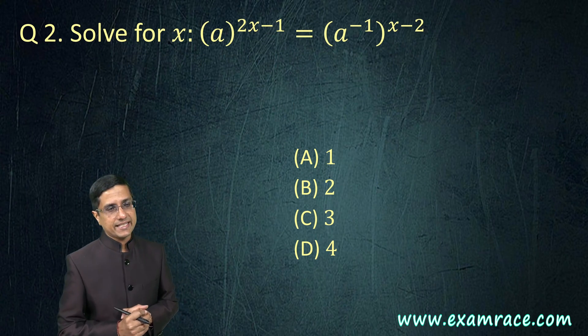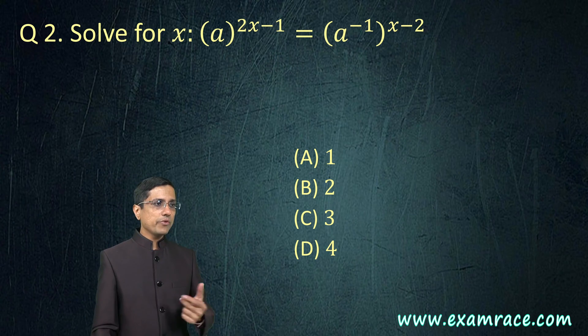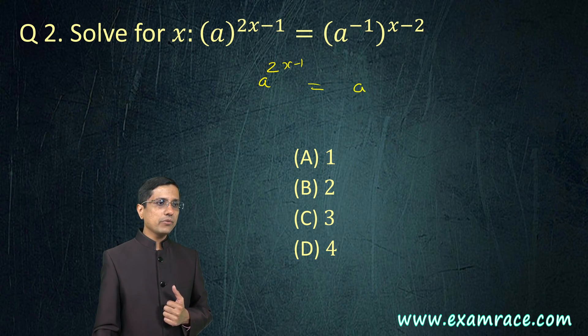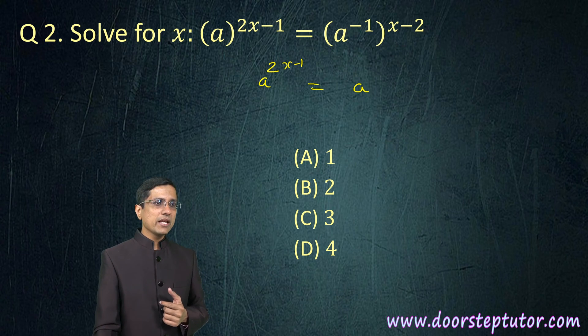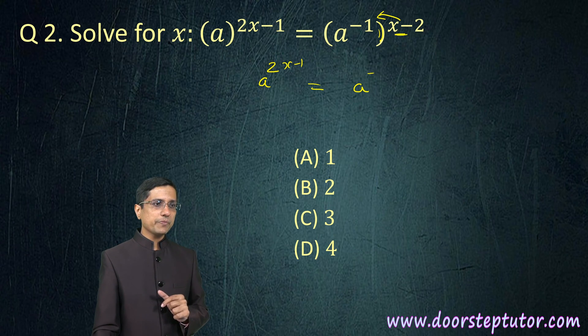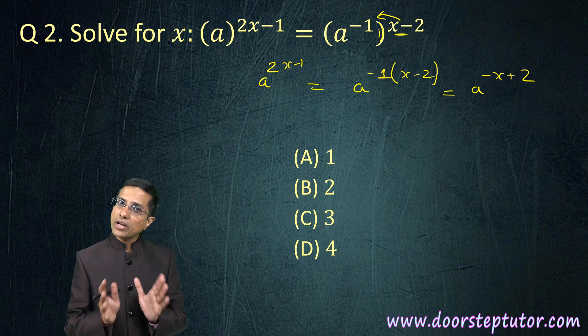Here, we need to find the value of X, so we need to solve for X and this is the indices question. A raised to power 2X minus 1 is equal to A raised to power - the rule here is, if I open this bracket, this X minus 2 would be multiplied by minus 1. This becomes minus 1 into X minus 2 and this becomes A raised to power minus X plus 2. That is all I need to do.